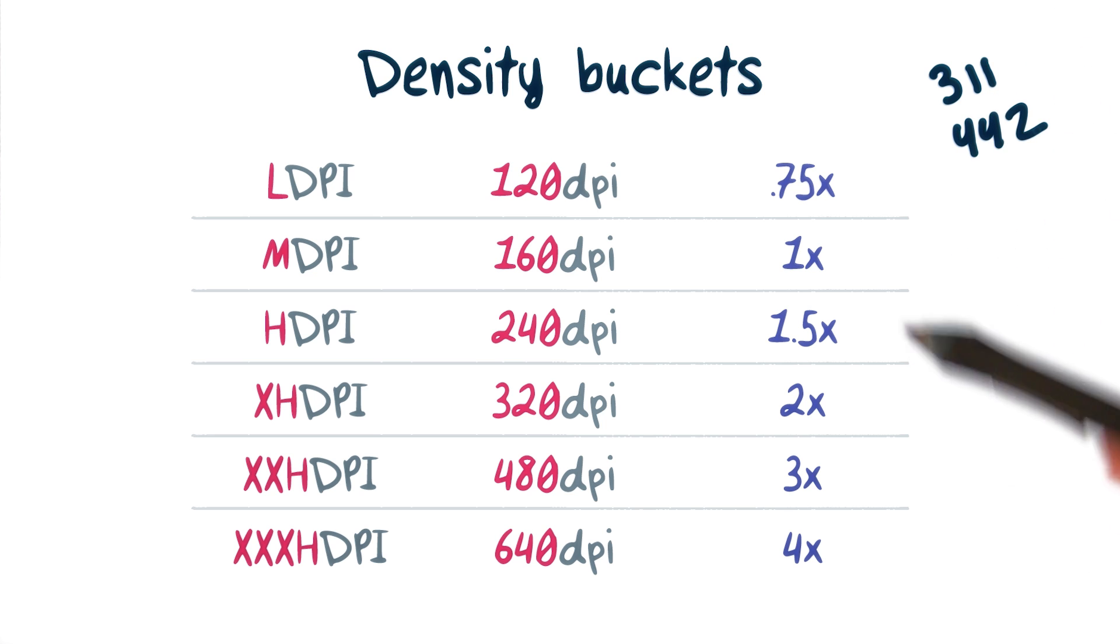Android groups devices into a number of density buckets. Each device gets assigned a density bucket that most closely matches its actual pixel density.